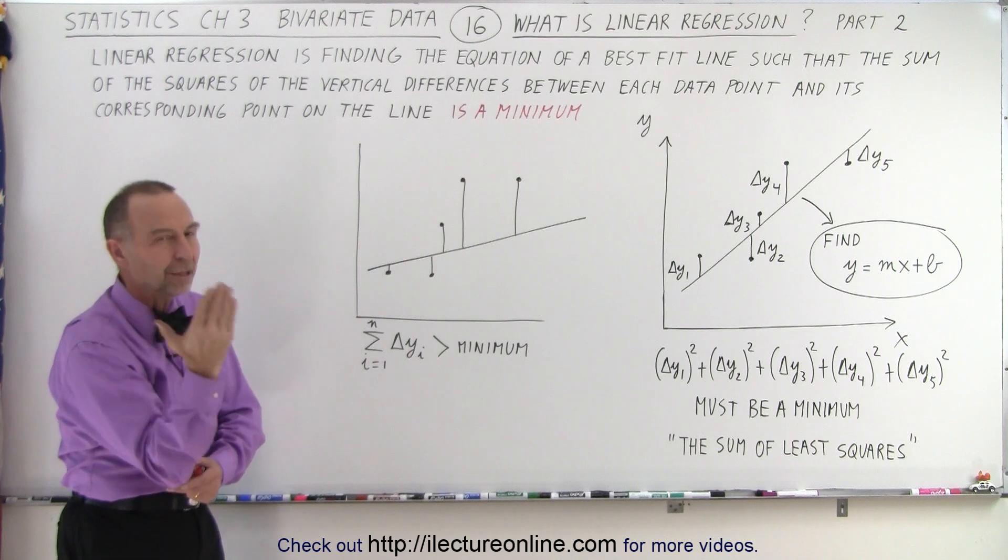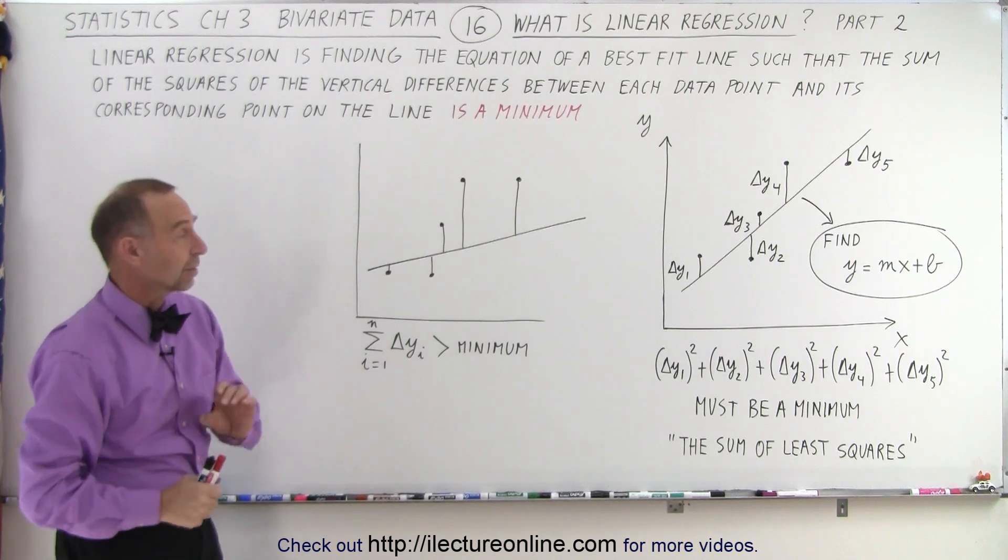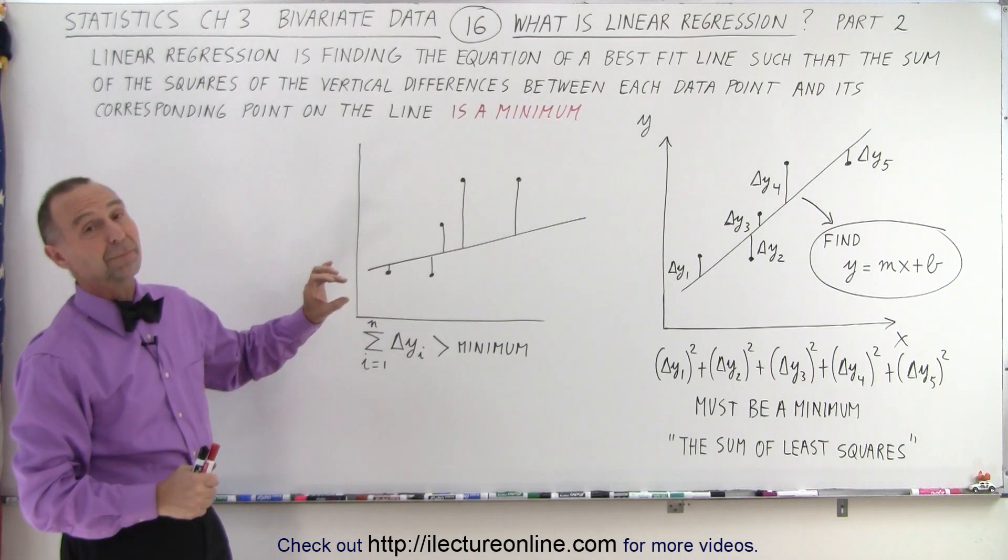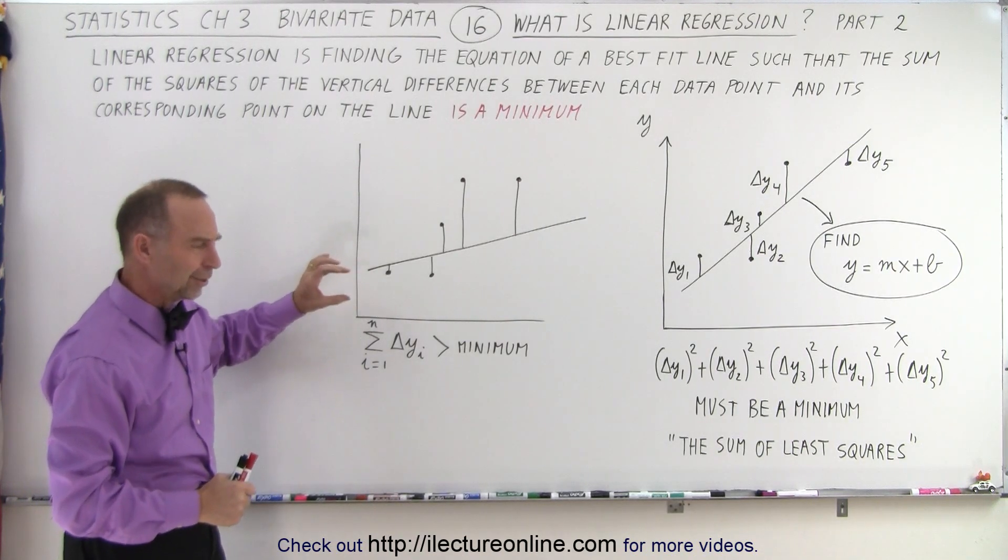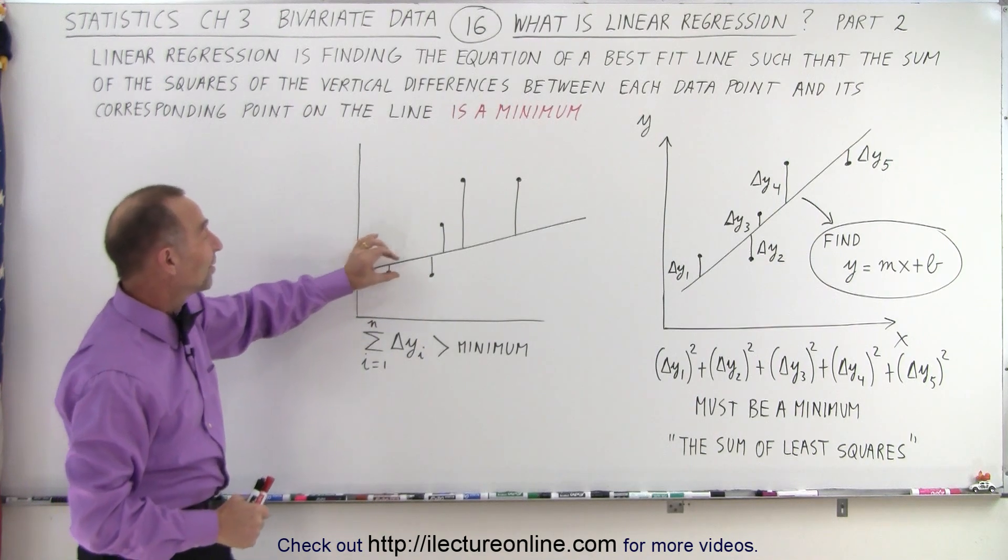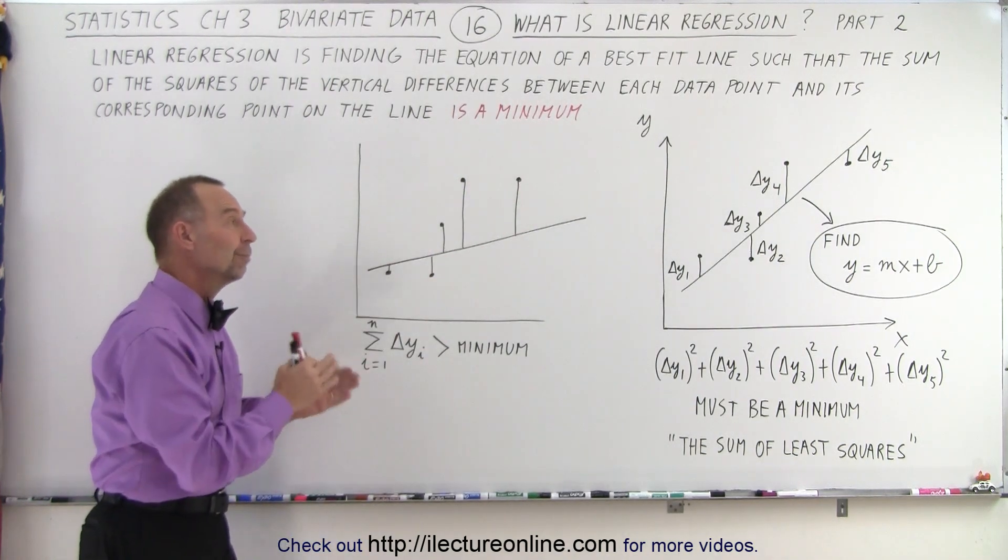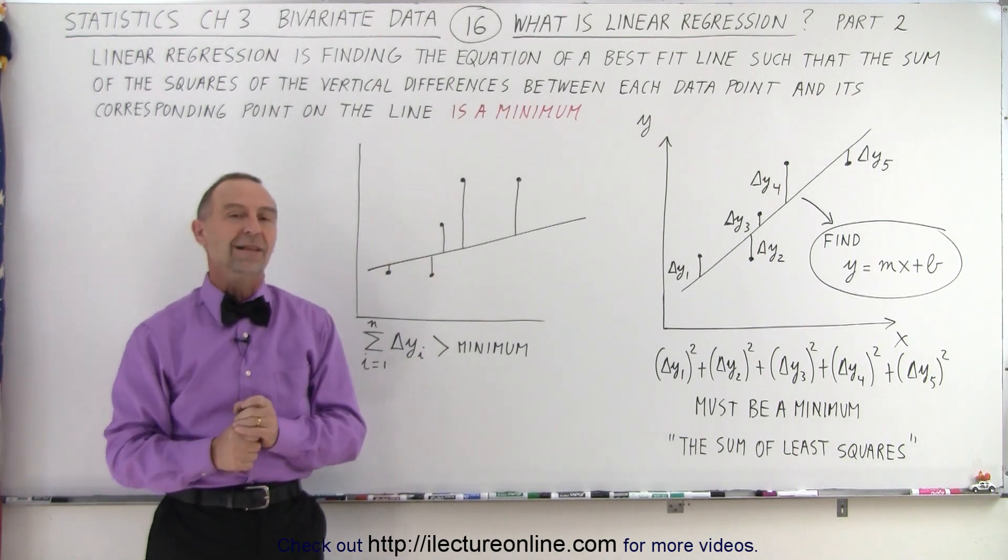Linear regression is finding the best fit line, and the mathematical definition is something is happening, our dogs are kind of going crazy. Anyway, so what you take then is you take these differences, you square them, add them up, and that should therefore be a minimum if we pick the best line.